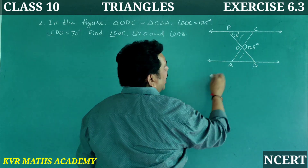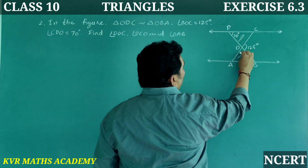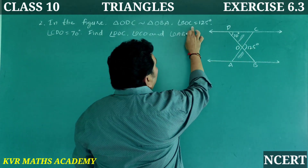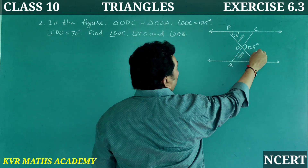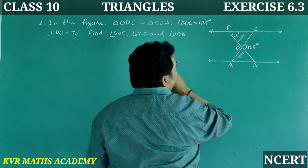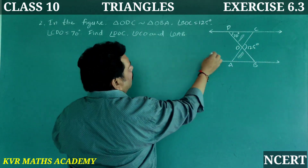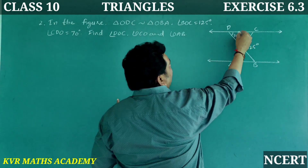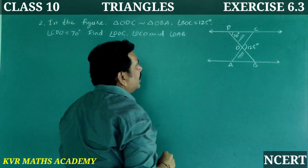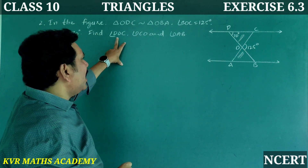In the given figure, triangle ODC is similar to triangle OBA - these two triangles are similar. Angle BOC is equal to 125 degrees as given. Next, angle CDO is equal to 70 degrees as given.